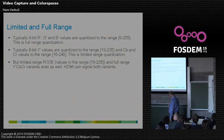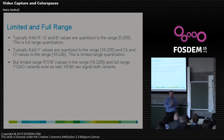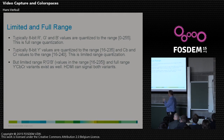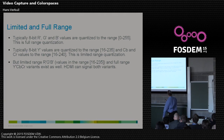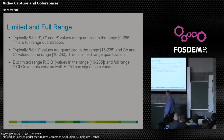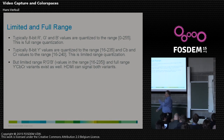Limited and full range quantization: RGB is typically 0 to 255 — full range. YCbCr is typically limited range, roughly 16 to 235. But you also have limited-range RGB and full-range YCbCr. HDMI connectors can signal both.